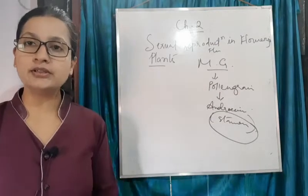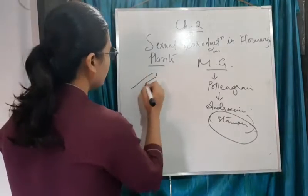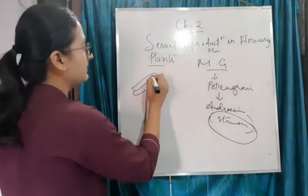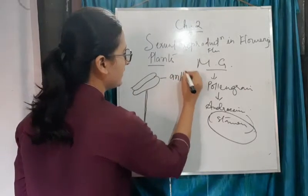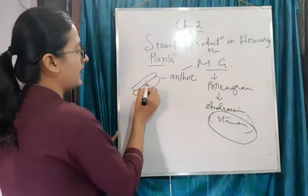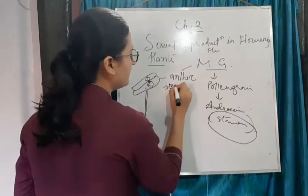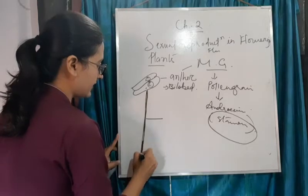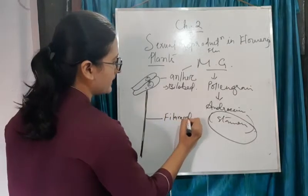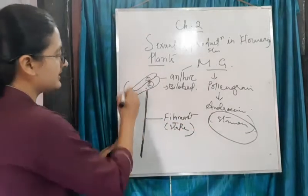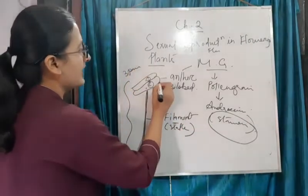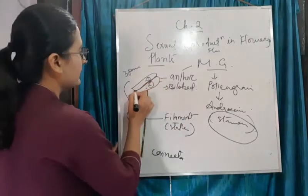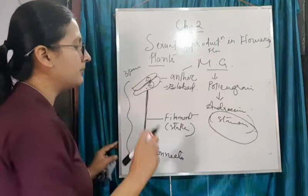The bulb-like structure at the top is called the anther. You can see it has two parts, so the anther is bilobed. The long slender structure is called the filament, also called the stalk. So the stamen has three parts: anther, filament, and connector. The filament and anther are connected by the connector.